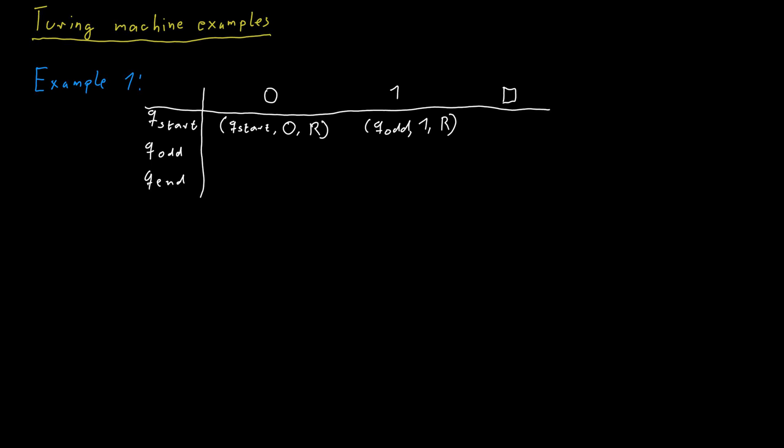If it encounters a blank symbol in the start state, then it moves to the end state, and it writes a 0 instead of the blank symbol and then stops.